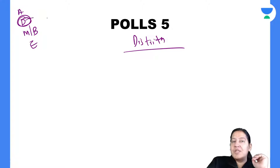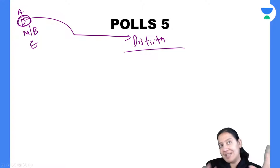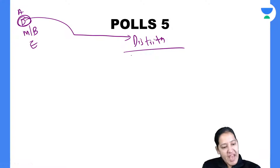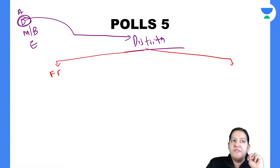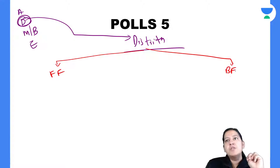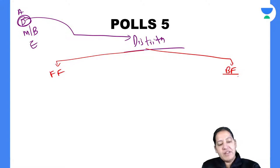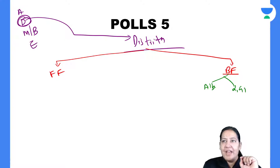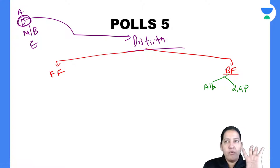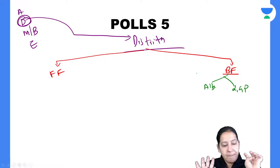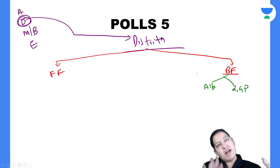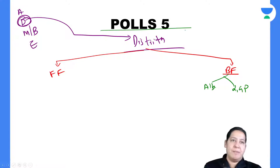Summary of distribution: drugs in the blood exist in two forms — free and bound. Bound form is the drug bound to protein; acidic drugs bind with albumin and basic drugs bind with alpha-1 glycoprotein. Free drug is the active drug — it moves to the site of action, shows mechanism of action, goes to the liver for metabolism, and to the kidney for excretion. Bound form is the reservoir — it is neither metabolized nor excreted until converted to free form.